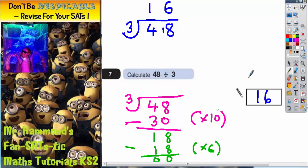So we've got a chunk of 10, we've got a chunk of 6. If we add those together, my chunk of 10 and my chunk of 6, that means we've done 16 chunks altogether. 10 and 6 is 16.